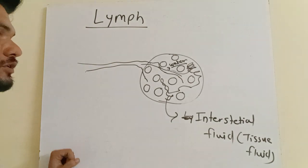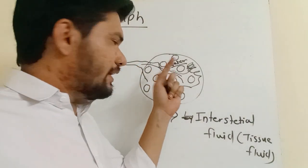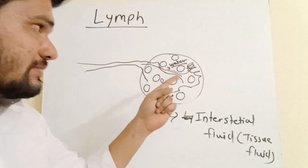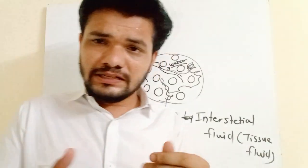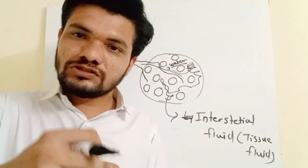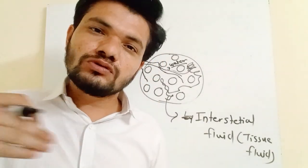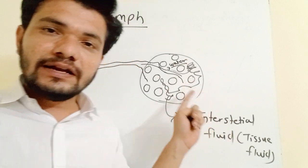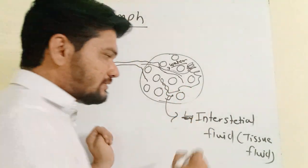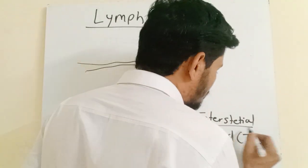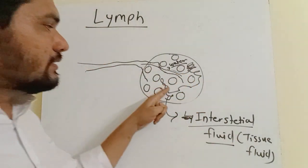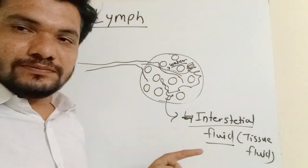Proteins remain in the blood capillaries, but water and some water-soluble substances go into this interstitial space. This is called interstitial fluid, which is present in the space between the cells.